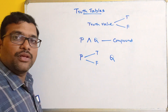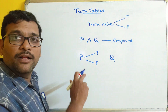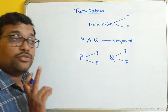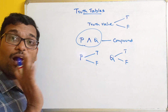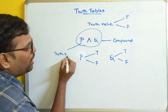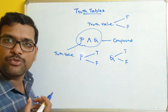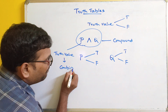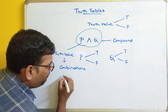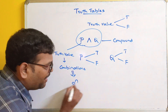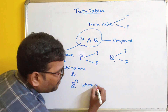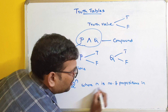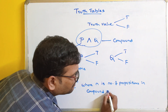Similarly, Q is one more proposition and its truth value will be either true or false. For any simple or atomic proposition, the truth value will be either true or false. But for a compound proposition, there will be multiple combinations to check. The number of combinations will be two power n, where n is the number of propositions in the compound proposition.